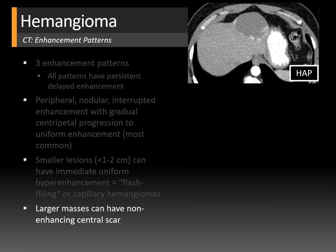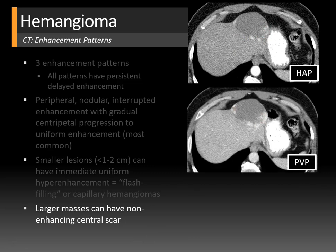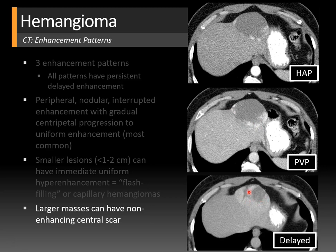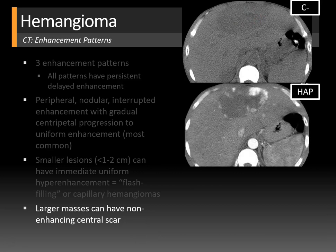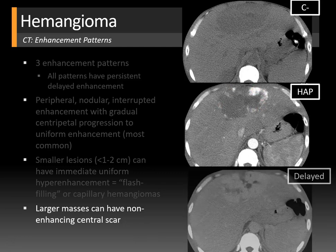The third pattern is seen with larger masses, which can have a non-enhancing central scar. On the hepatic arterial phase, a large hemangioma starts with peripheral nodular enhancement that begins to coalesce centrally on the portal venous phase, but even on delayed phase the center doesn't fully enhance — there is a non-enhancing scar. The scar appears more hypodense relative to the surrounding hemangioma on non-contrast imaging. This is a typical pattern for large hemangiomas.